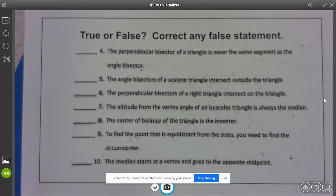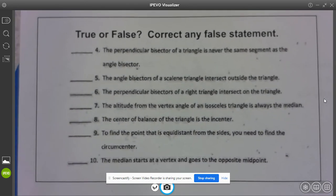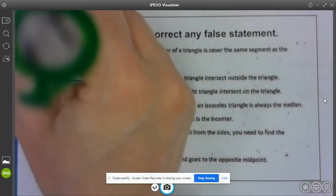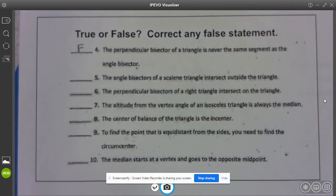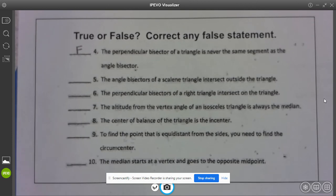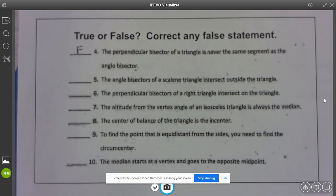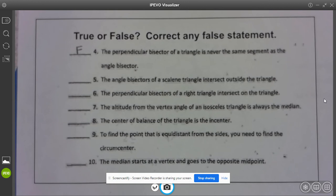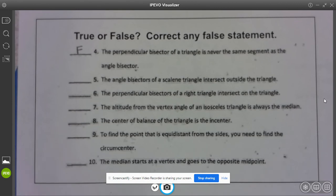Alright, last but not least true false and if something is false we're going to fix it. Perpendicular bisector of a triangle is never the same segment as the angle bisector. Well that's actually not true and there's one special case where this would work.